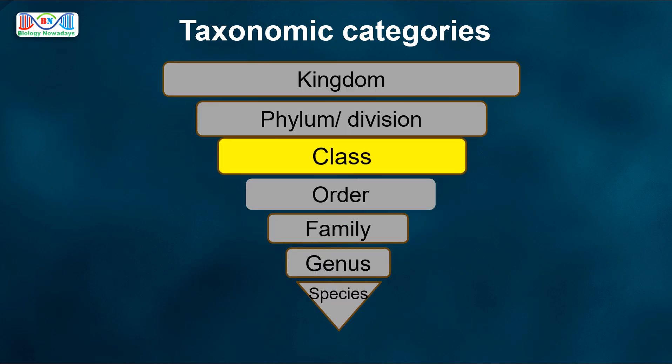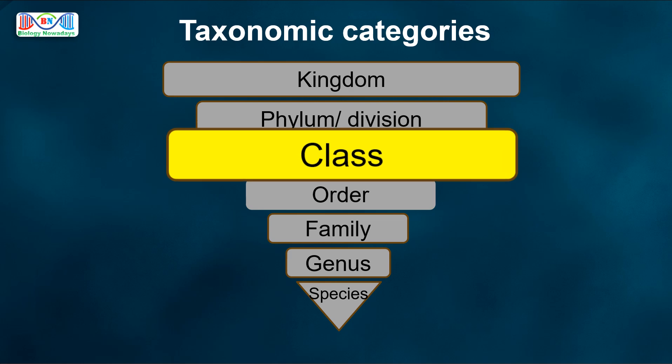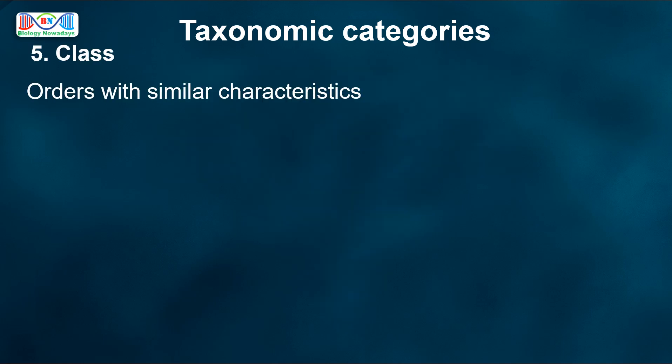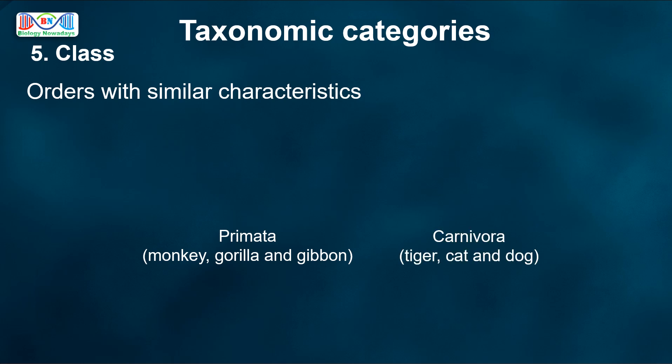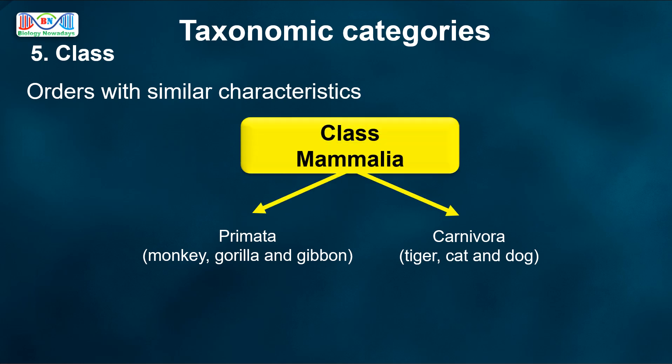Next higher category is Class. Related orders with similar characteristics come under the same class. For example, order Primata comprising Monkey, Gorilla and Gibbon, and order Carnivora that includes animals like Tiger, Cat and Dog, are placed under the class Mammalia. These animals are placed under the class Mammalia because they are all warm-blooded animals which give birth to their young ones.